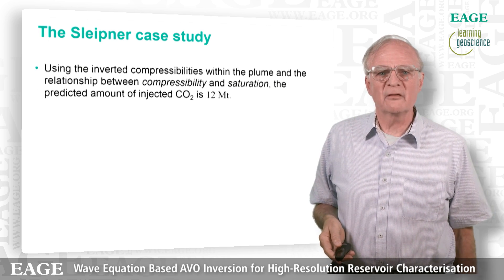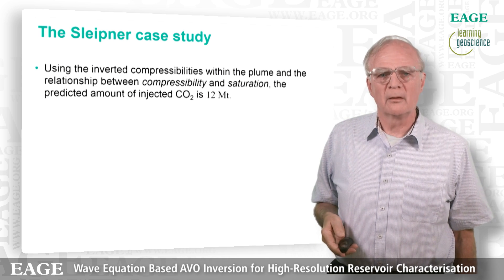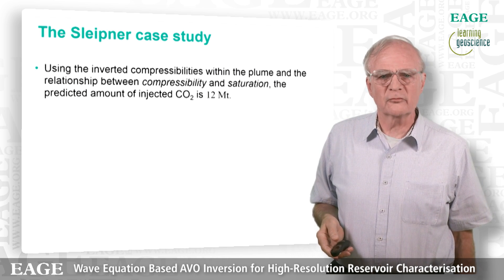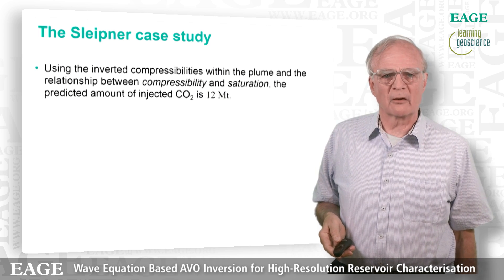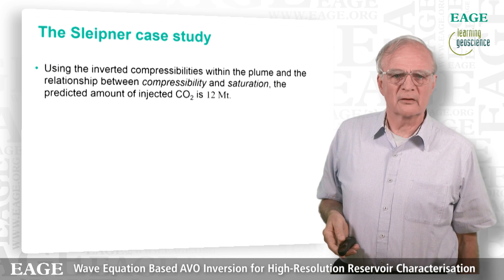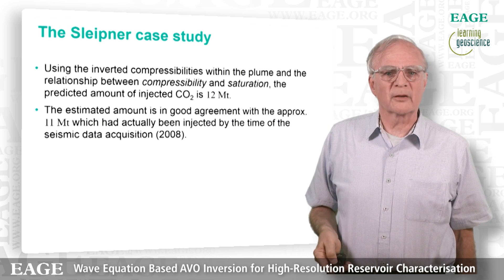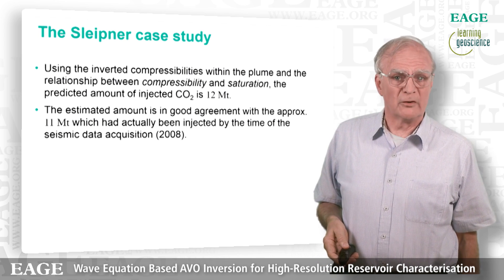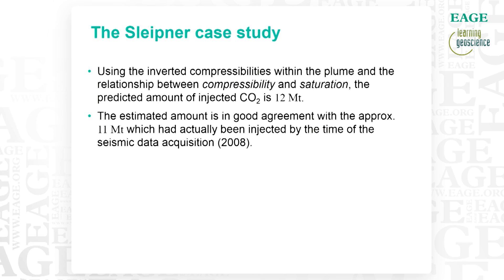Using the inverted compressibility inside the plume cutoff geobody and the saturation from the curve, we calculate that the total amount of CO2 injected is 12 megatons. This can be compared directly with what we know: at the date of the 2008 survey, 11 megatons had been injected. We think that's qualitatively a very good agreement.